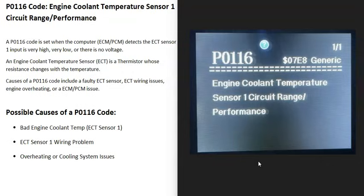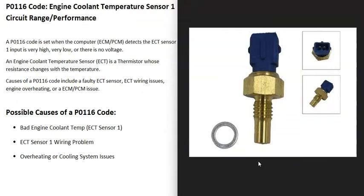Today I'm talking about a P0116 code — what it is and how you go about fixing it. A P0116 is an engine coolant temperature sensor one circuit range performance. Basically, engines have an engine coolant temperature sensor that reports back to the computer what the temperature of the engine is. The computer uses this for things like when to go into closed loop, and when you get a P0116 code the computer is seeing some kind of problem with this sensor.